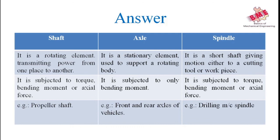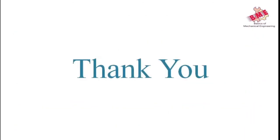An example of a shaft is a propeller shaft. An example of an axle is the front and rear axles of vehicles. Spindles are used in drilling machines, milling machines, and lathe machines. This is the difference between shaft, axle, and spindle. To summarize this video, we have seen what is a shaft, types of shafts, and the difference between shaft, axle, and spindle. In the next video, we will see what formulas are required to design the shaft. Thank you.